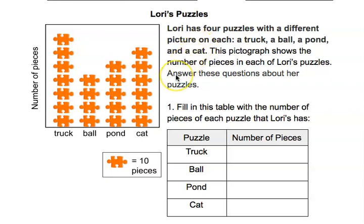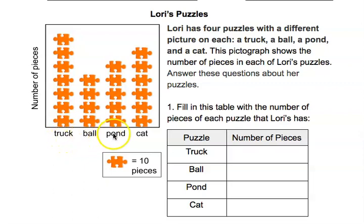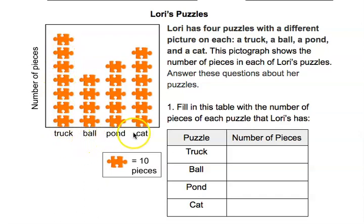Answer these questions about her puzzles. Here's the pictograph — here's how many pieces the truck has, the ball has, the pond, and the cat. Here's the scale: one puzzle piece represents 10 pieces. So when you use that scale, you can see how many total the truck has, the ball, the pond, and the cat.